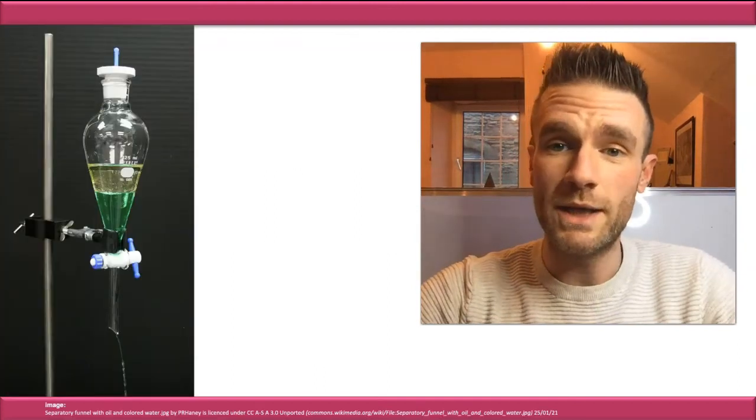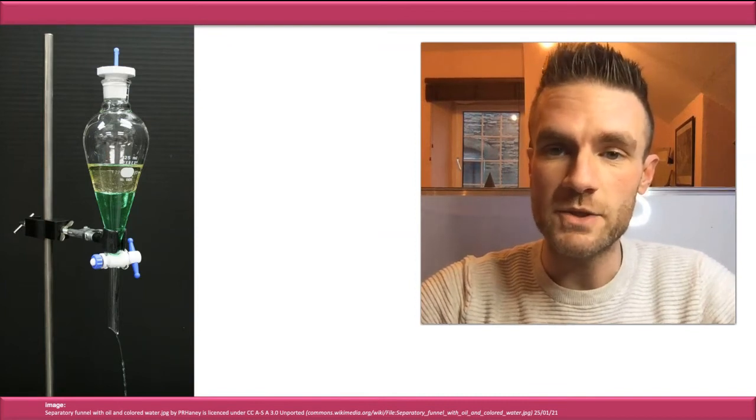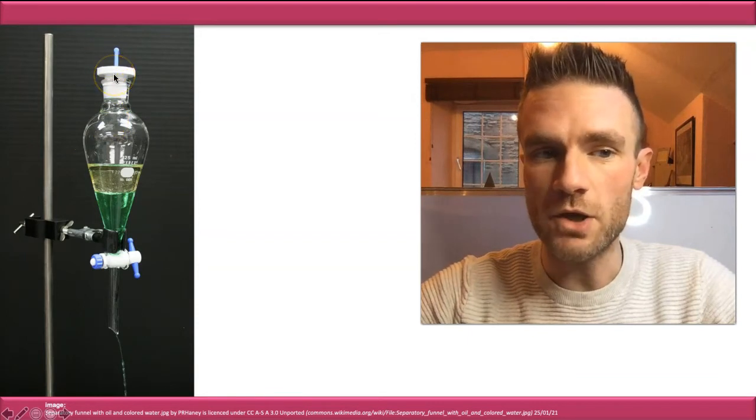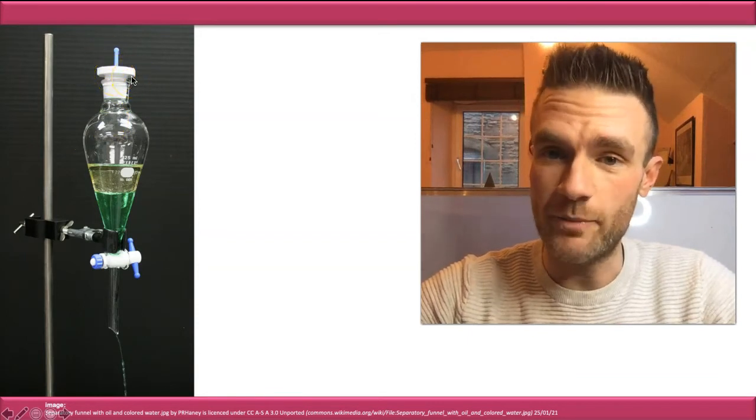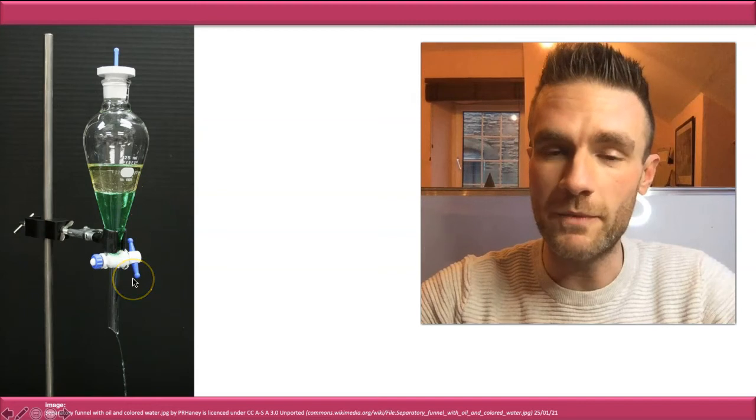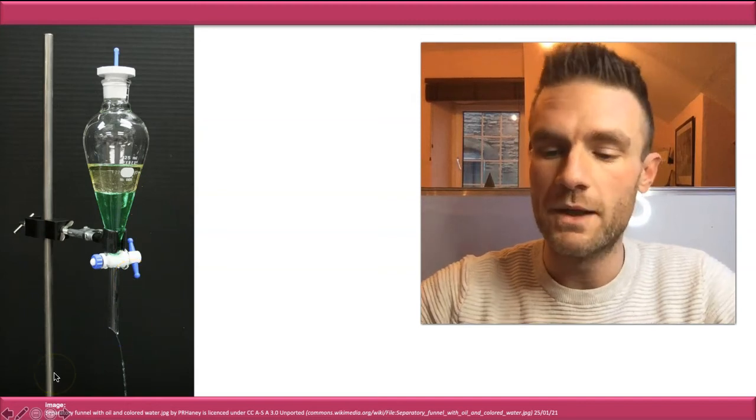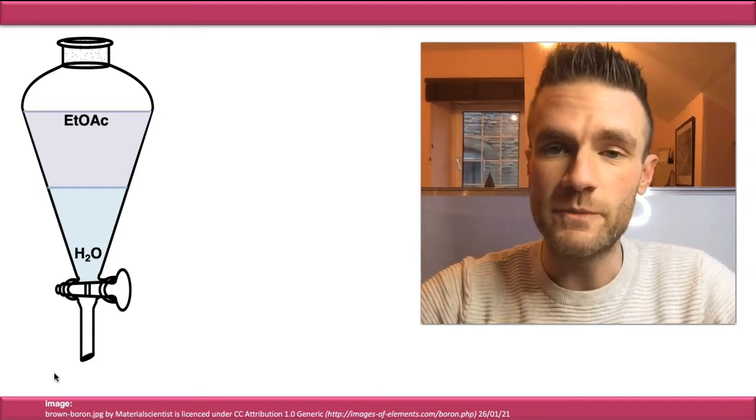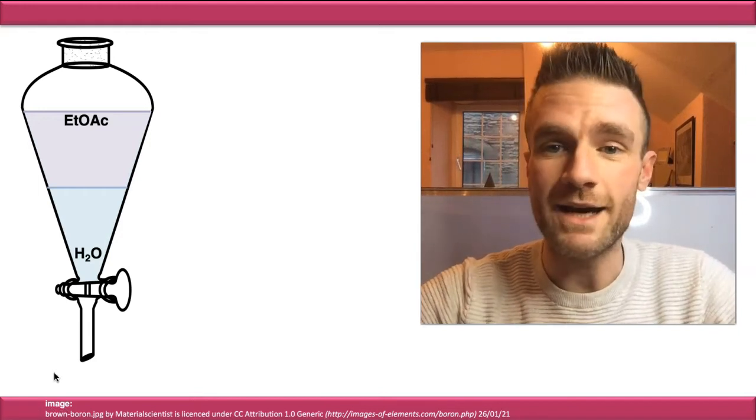So when you actually do liquid-liquid extraction in the lab, this is the piece of kit you're going to be using. It's called a separating funnel. And you'll notice that you can pour your two phases in at the top, give them a shake, allow them to separate, and then you can drain the bottom layer out through the tap at the bottom. So I've just got a cartoonized version of this, and I've just swapped the organic phase here for something that you're more likely to come across in the lab, which is ethyl acetate.